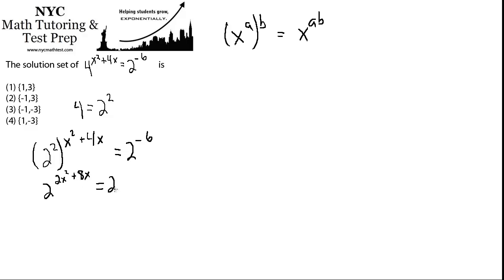And that's equal to the right side, which we have not changed, 2 raised to the negative 6. So now, we can say, if 2 raised to this whole thing is equal to 2 raised to negative 6, then those exponents must be equal, because they're the same base. So whatever 2 is being raised to here is equal to whatever 2 is being raised to here. And now we actually have a fairly straightforward, I'm going to write it over here because there's more room, we have a fairly straightforward quadratic equation. 2x squared plus 8x equals negative 6.